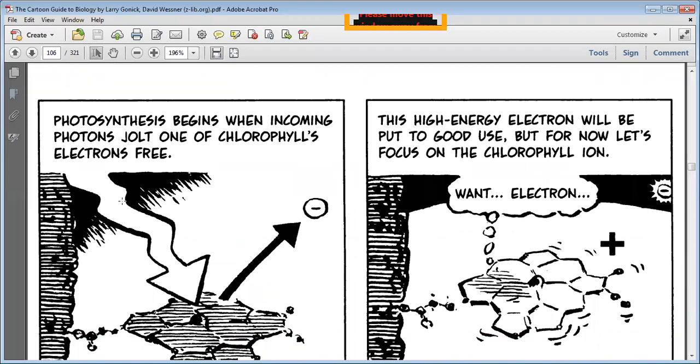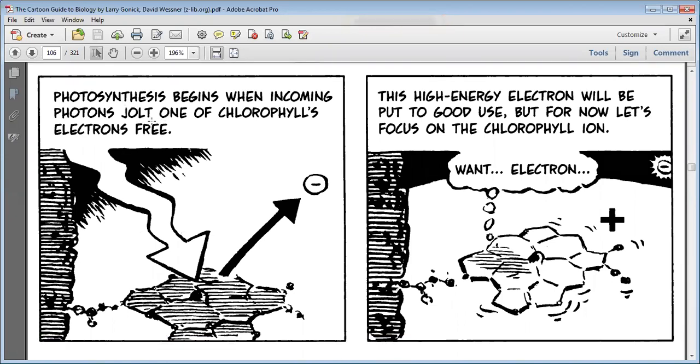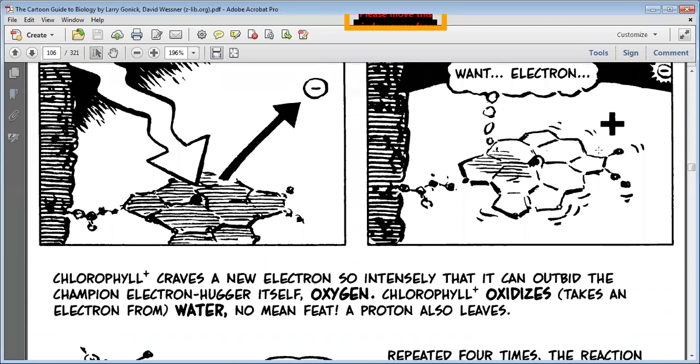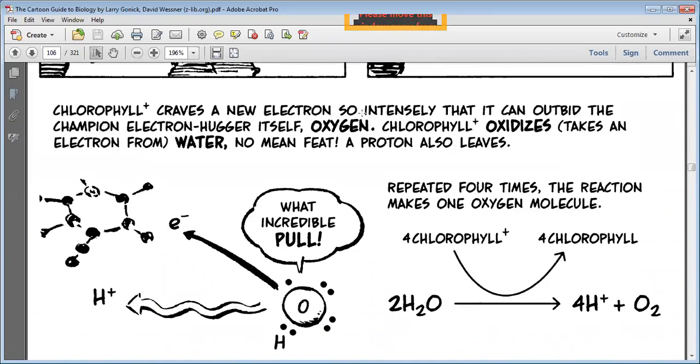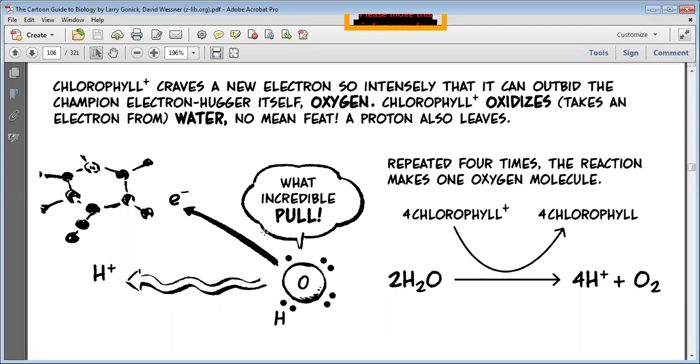Photosynthesis begins when incoming photon jolts one of chlorophyll's electrons, springing it free. This high-energy electron will be put to good use. But for now let's focus on the chlorophyll ion. Chlorophyll craves a new electron so intensely that it can outbid the champion electron hog itself, oxygen. Chlorophyll oxidizes, takes an electron free from water. A proton also leaves. So this is the structure of water, how structure of water helps in chlorophyll.